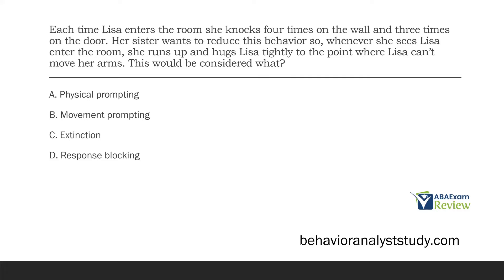Maybe blocking the response works to reduce it — maybe it acts as a punisher — but it doesn't act as extinction. Not until Lisa can actually knock can her sister implement extinction. Response blocking is not extinction; they have to be able to engage in the response. So if the sister is hugging Lisa tightly to the point where she can't move her arms, this would be considered D, response blocking.